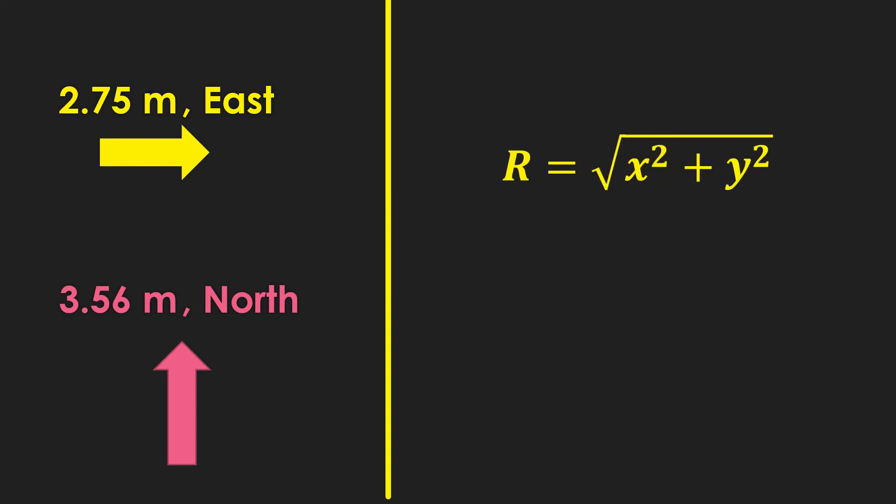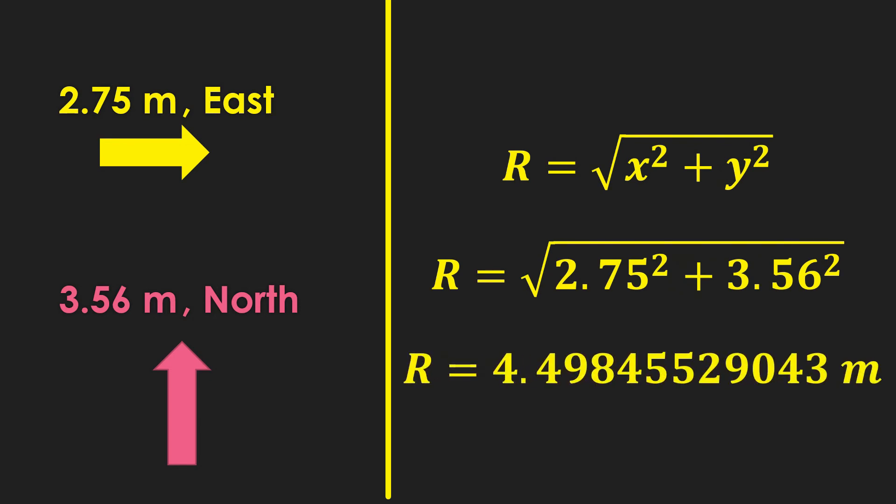Let's use the Pythagorean theorem. Substitute the values. We get 4 dot, a long answer. So if we want 3 significant figures, we just get 4.50 meters.